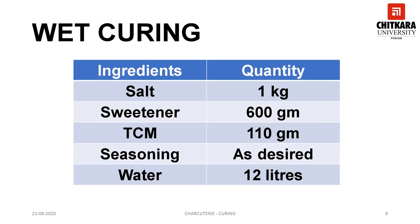This slide shows a formula for preparing a wet curing mix for meat, which comprises salt, sweetener, TCM, seasoning, and water. To get a good quality cured product, one needs to adhere to the quantities as given in the table.